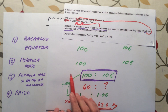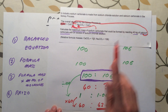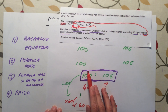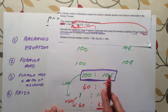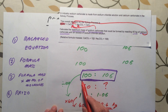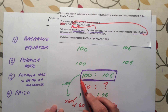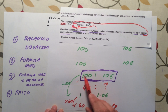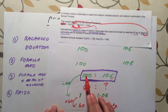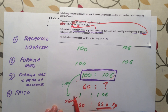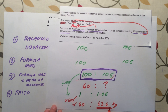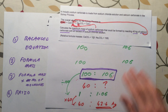Quick recap: from the relative formula masses I worked out the ratio of calcium carbonate to sodium carbonate, which was 100 to 106. We wanted to know how much sodium carbonate we'd make from 40 kilograms of calcium carbonate. I divided through by 100 to get 1 to 1.06, then multiplied through by 40 to get 40 to 42.4 kilograms of sodium carbonate.